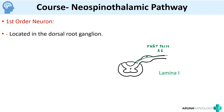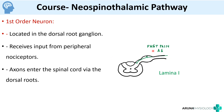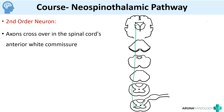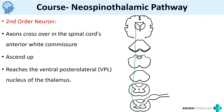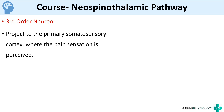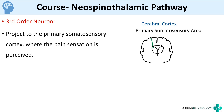For the neospinothalamic (fast pain) pathway: the first order neuron is located in the dorsal root ganglion, receives input from peripheral nociceptors via A-delta fibers, and its axons enter the spinal cord specifically at lamina 1. The second order neuron crosses over through the anterior white commissure, ascends, and reaches the VPL (ventroposterolateral) nucleus of the thalamus. The third order neuron projects to the somatosensory cortex where pain sensation is perceived.